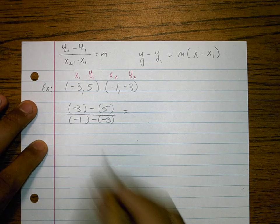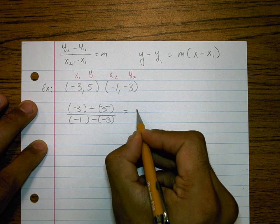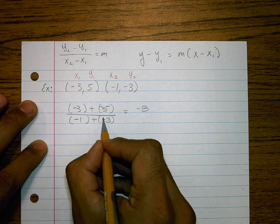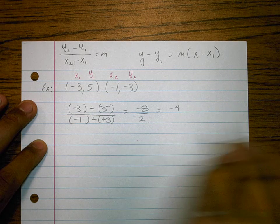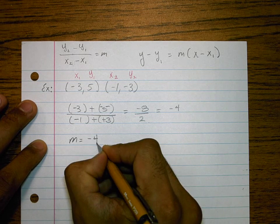Be real careful with adding the opposites here. So that's negative 8, and that's positive 2, and that equals negative 4. So now I have a slope of negative 4.